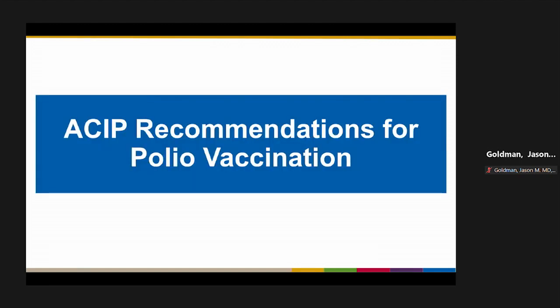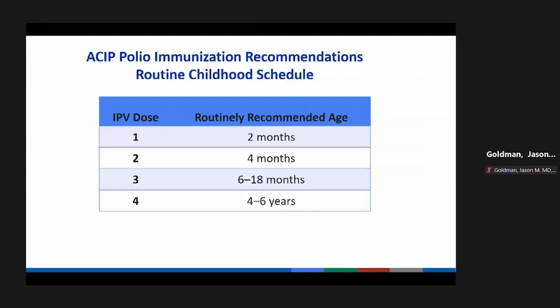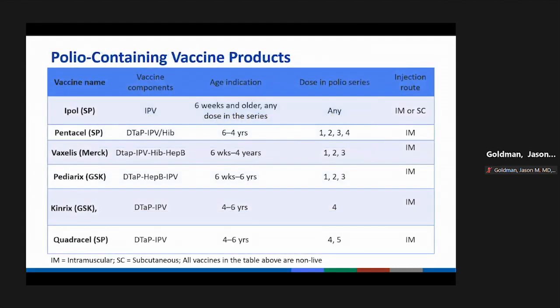The routine childhood schedule in the United States consists of four IPV doses, routinely given at two months, four months, between six to eighteen months, and a booster dose at four to six years. There are numerous polio-containing vaccine products on the market — one is an IPV polio-only vaccine, and the remainder are combination vaccines, which are preferred in most circumstances.